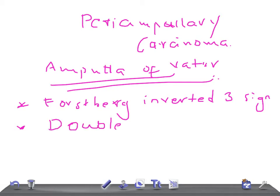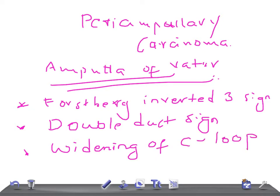Then widening of the C-loop. Carcinoma of the head of the pancreas shows the antral pad sign. You can write antral pad sign only if there's carcinoma of the head of the pancreas.